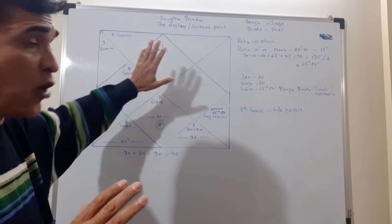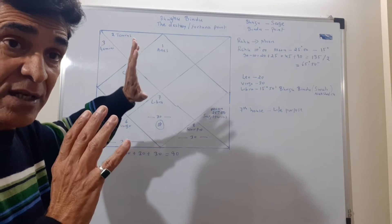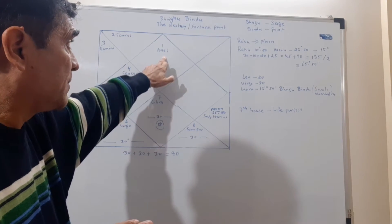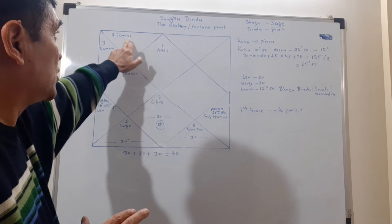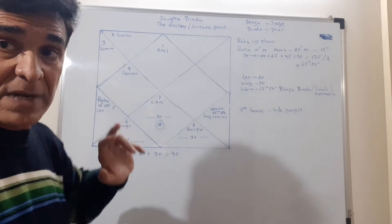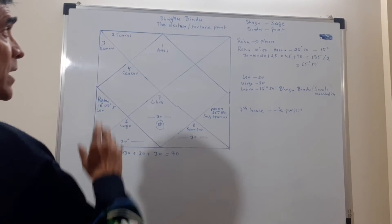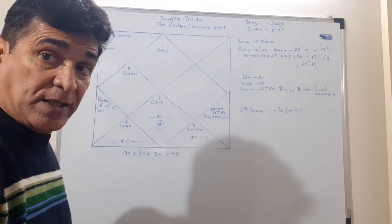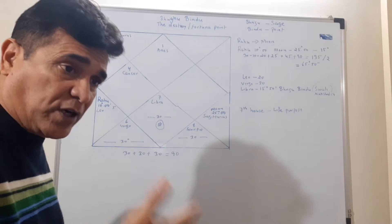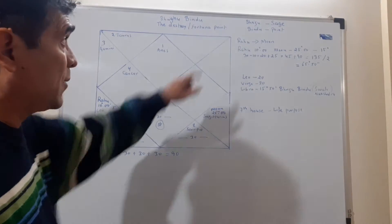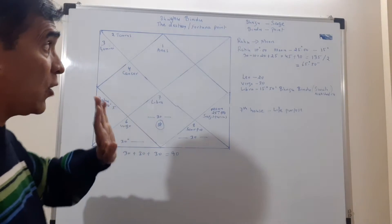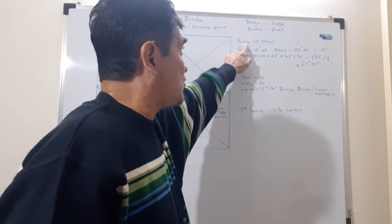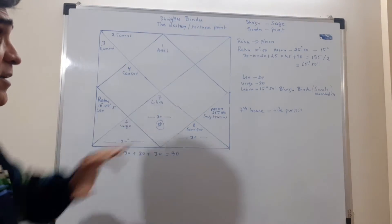This is a chart — a very common chart I call the Kal Purush Kundali — where I always place Aries at the lagna because it is the first sign. So: Aries, Taurus, Gemini, Cancer, and so on. I have not mentioned all signs because they are not all coming into play. First of all, let us understand: it is a destiny point, a Fortuna point. Bhrigu is a sage who worked on this concept. The key thing to remember is that the calculation always goes from Rahu as the starting point, moving towards the Moon.